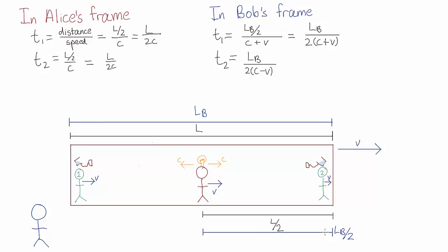In particular, while the two dunkings were simultaneous in Alice's frame, they are no longer simultaneous in Bob's frame.